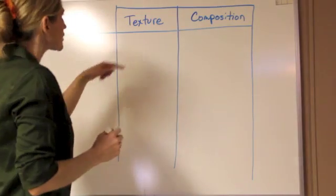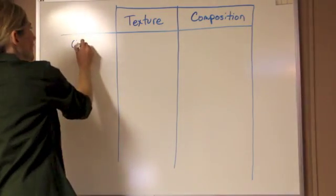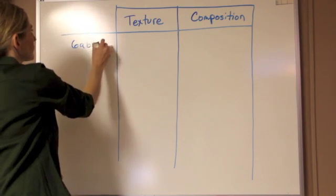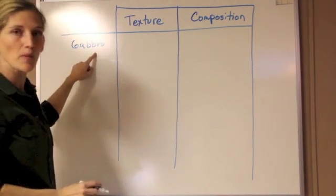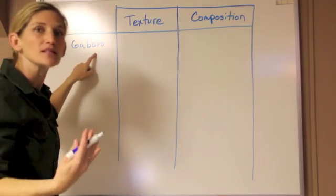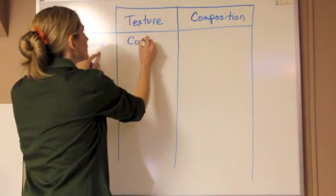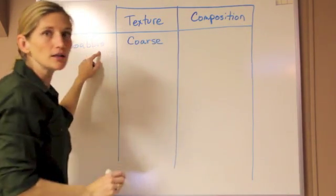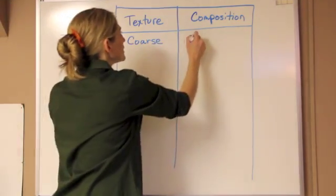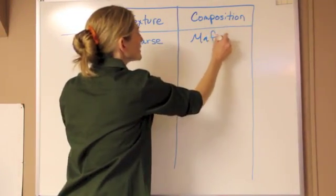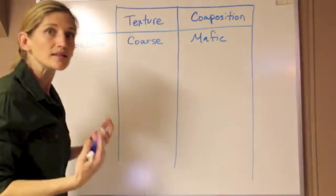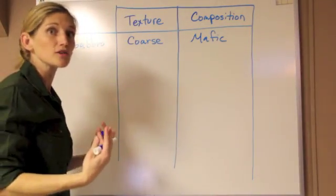When we look at rocks, if we list one like gabbro, what we want to remember on a test or when someone's talking to us is that gabbro is coarse-grained and its composition is mafic. That means it has those darker silicate minerals that give it an overall dark color.